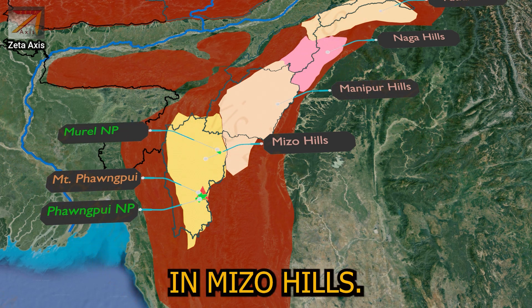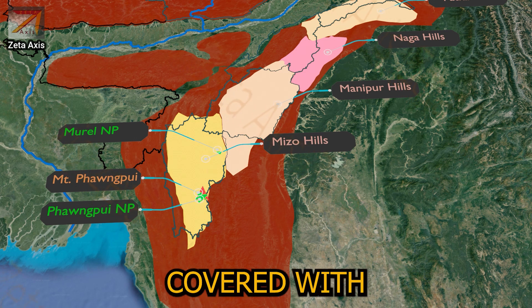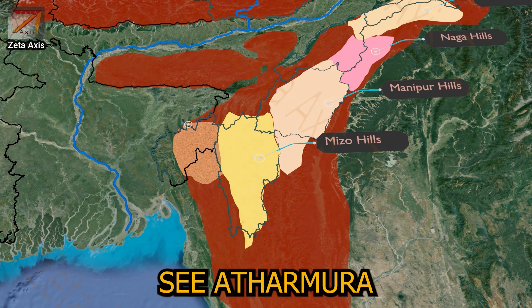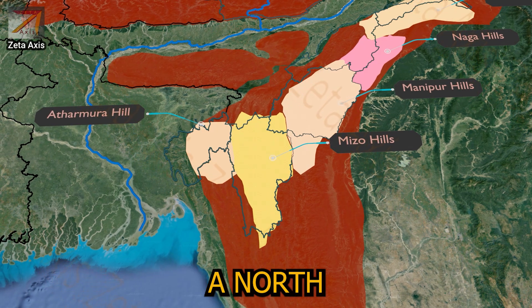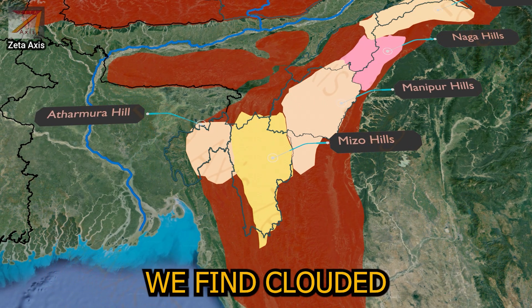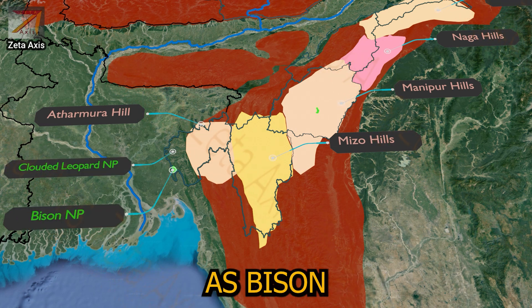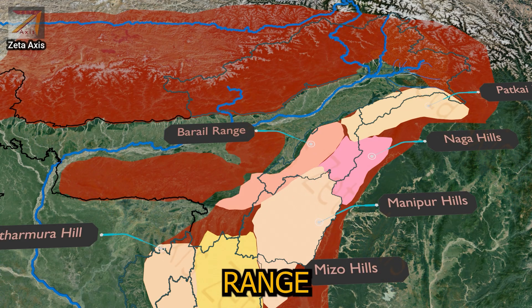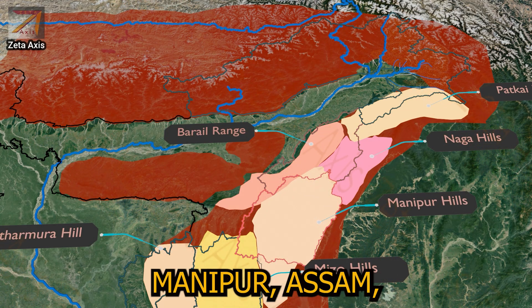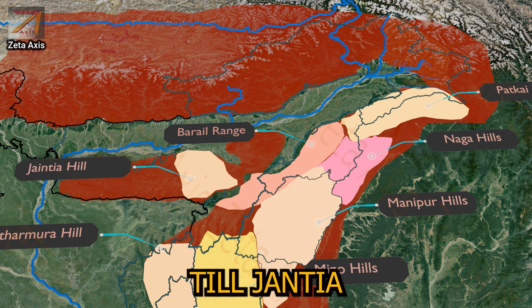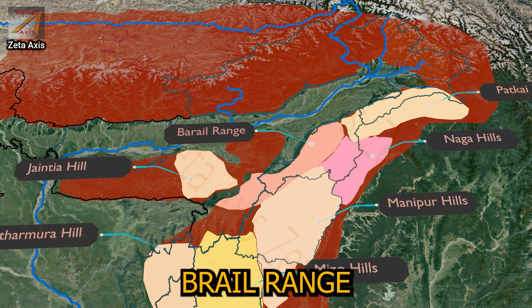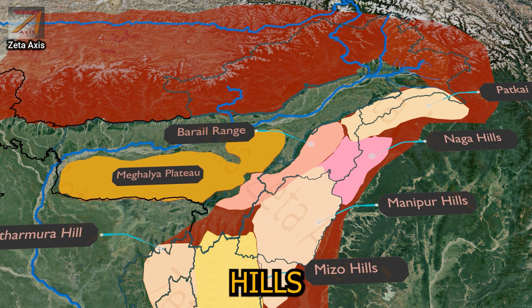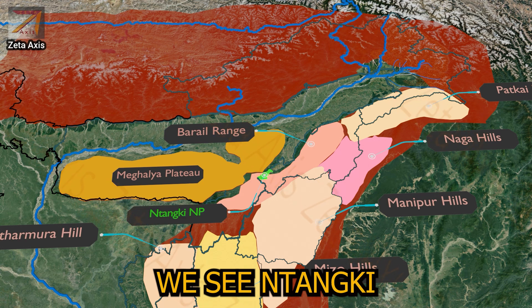Murlen National Park is also located in the Mizo hills, which are covered with thick bamboo forests. In the state of Tripura, we see Atharamura mountains, which also have a north-south orientation. In Tripura we find Clouded Leopard National Park as well as Sepahijala National Park. Coming back to the Barail hills — a south-westerly extension of the Patkai range — they are present in southern Nagaland, Manipur, and Assam, and extend to the Jaintia hills of Meghalaya. The Barail range connects the Meghalayan Plateau with the Naga hills. In the foothills of Barail hills we find Intanki National Park.